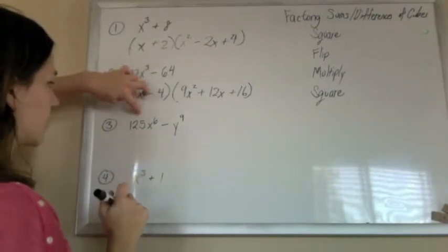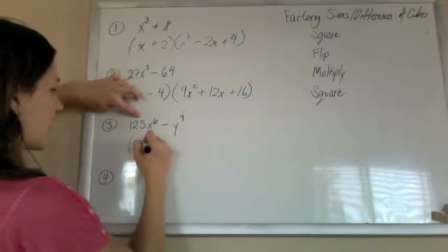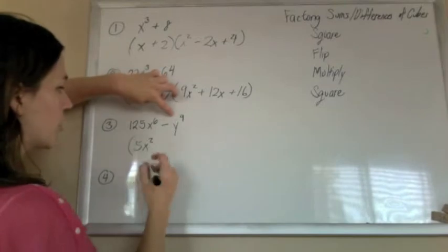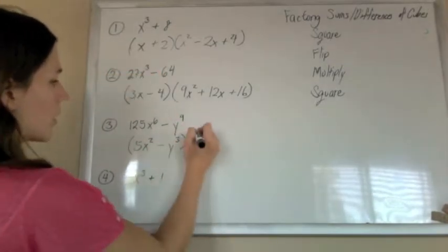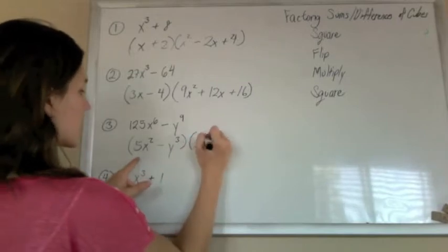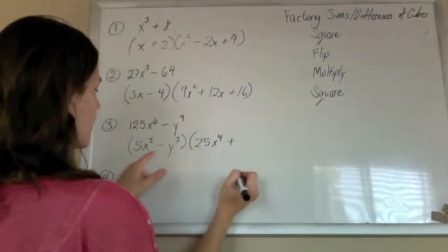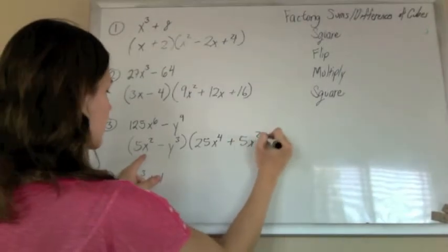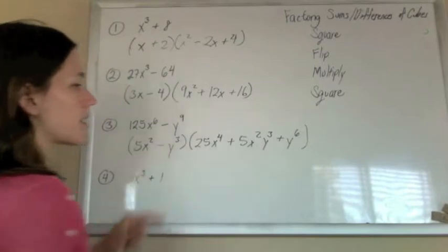Another difference of perfect cubes. So, cube root of this is 5x squared. Cube root of that is y cubed. Then we're going to square, so 25x to the 4th, flip, multiply, 5x squared, y cubed, square the last, plus y to the 6th.